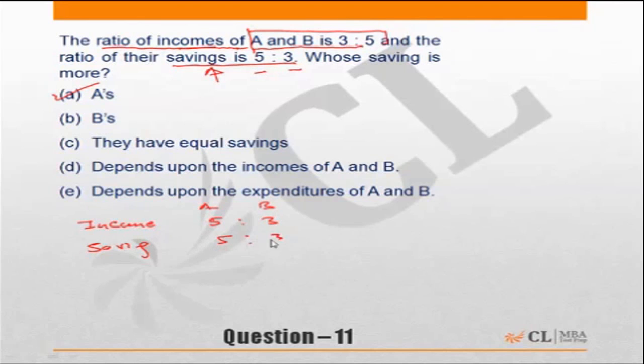is also in the ratio of 5 is to 3. Then what will be the ratio of the expenditures? Okay, so if I say the incomes are 5x and 3x, and savings are 5y and 3y, then the ratio of their expenditures will be 5 into x minus y is to 3 into x minus y.